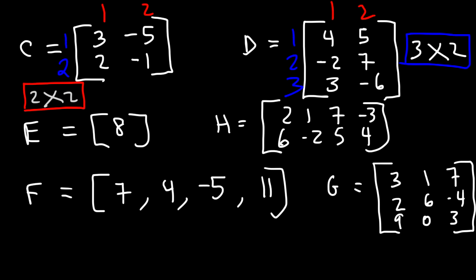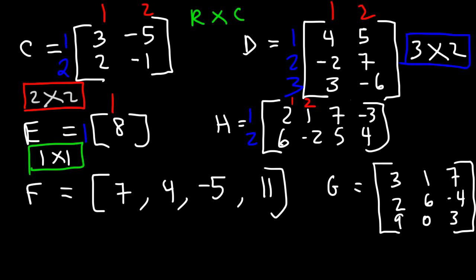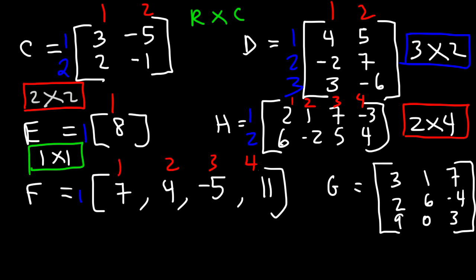The order of a matrix is always the number of rows times the number of columns. Matrix E has one row and one column — since it only has one number, it's a 1 by 1 matrix. Matrix H has two rows and four columns, so it's a 2 by 4 matrix. Matrix F has one row and four columns, so that's a 1 by 4 matrix.